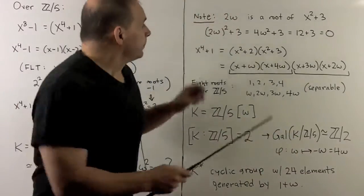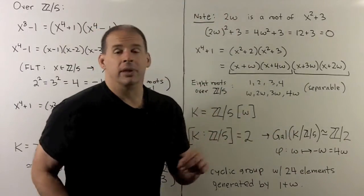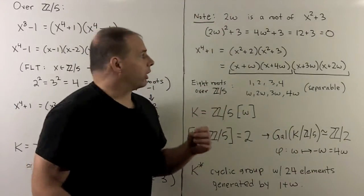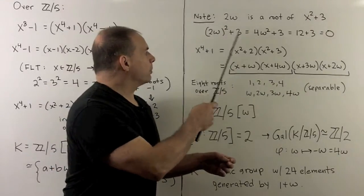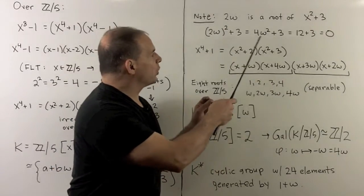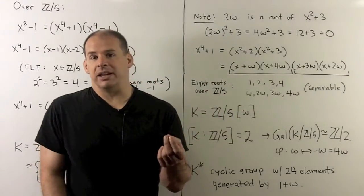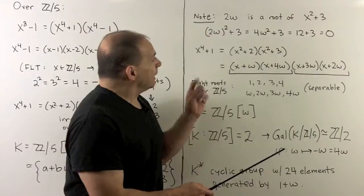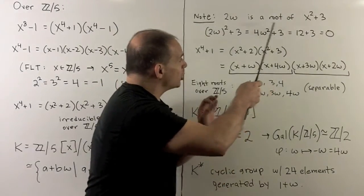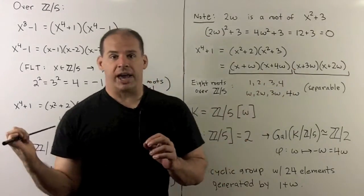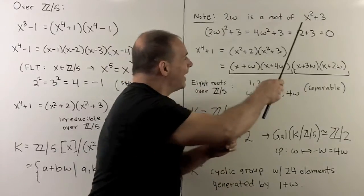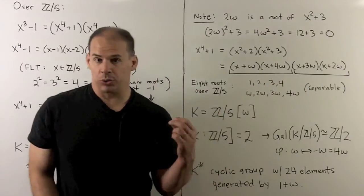We note, if I take 2ω, that'll be a root of x^2 + 3. So if I take (2ω)^2 + 3, I get 4ω^2 + 3. ω^2 is 3. We get 15, and that goes to 0. So that means, over our splitting field, first step, we'll also have that this irreducible factor also splits.